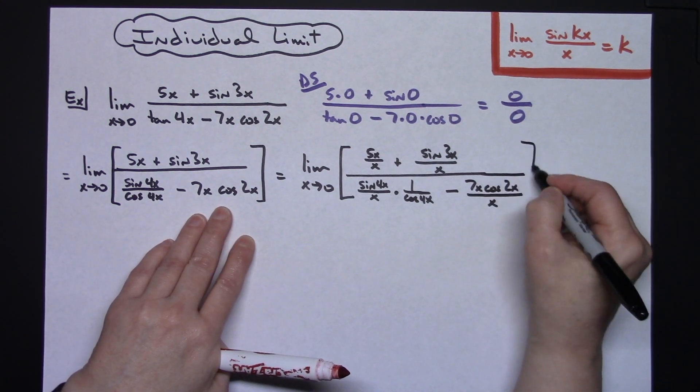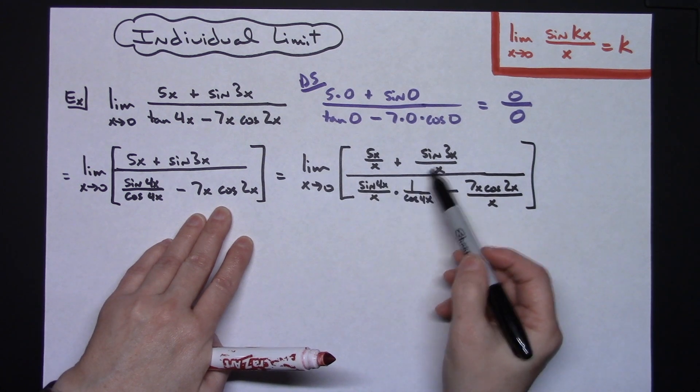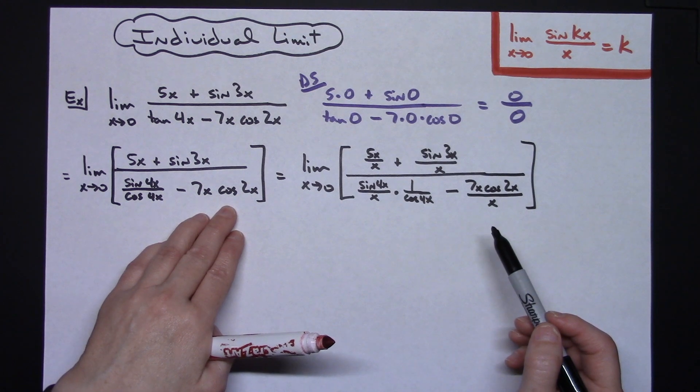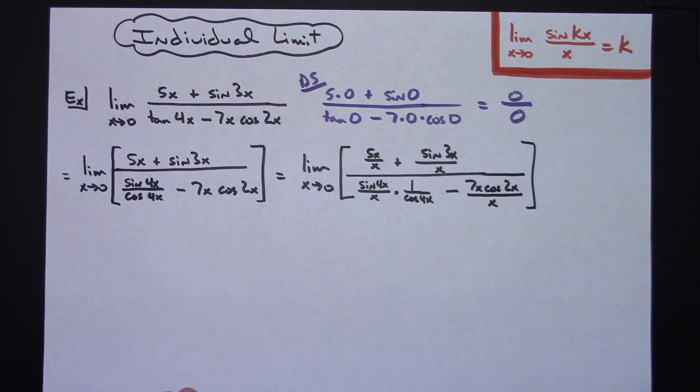So I divided each term, each of the four terms there, by the highest power of x in the denominator which was a plain x.